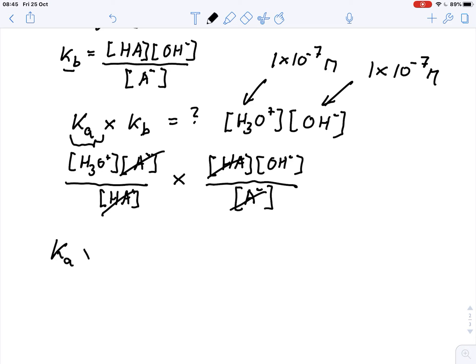So actually what I have here is Ka times Kb equals 1 times 10 to the minus 14. 10 to the minus 7 times 10 to the minus 7 gives 10 to the minus 14 molar squared.